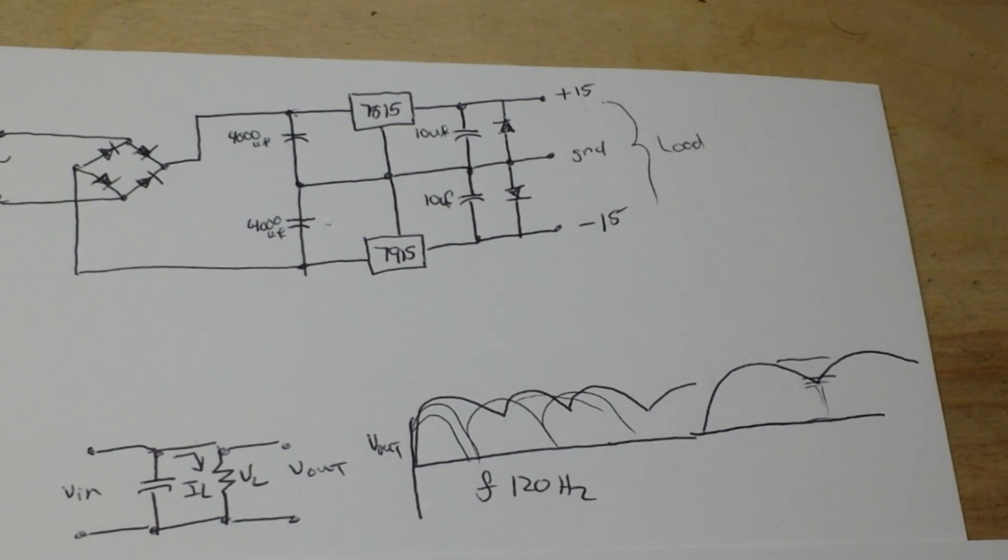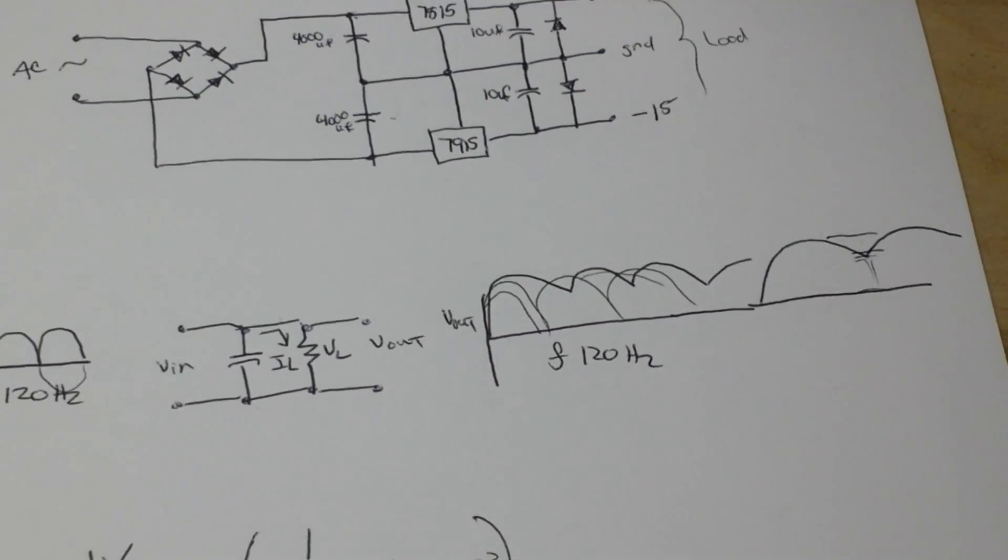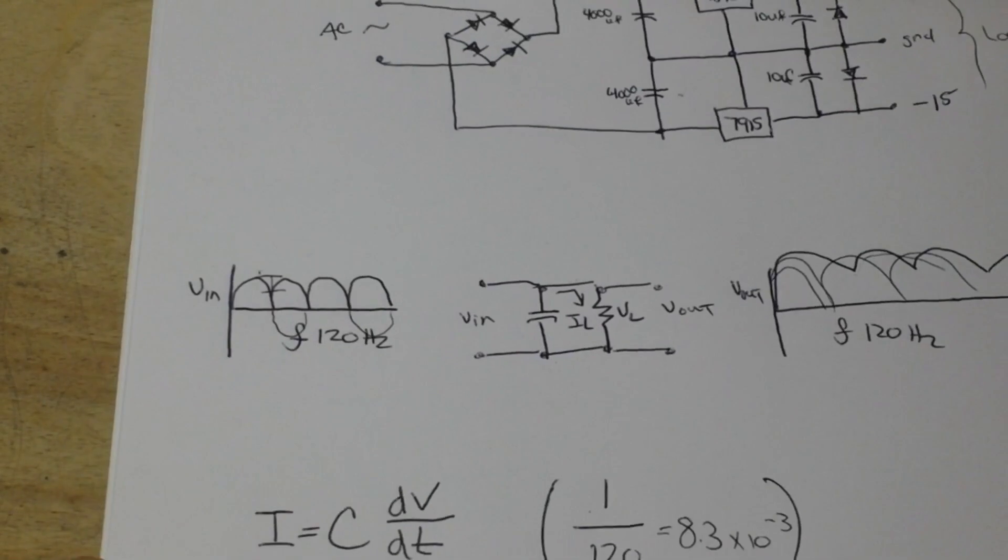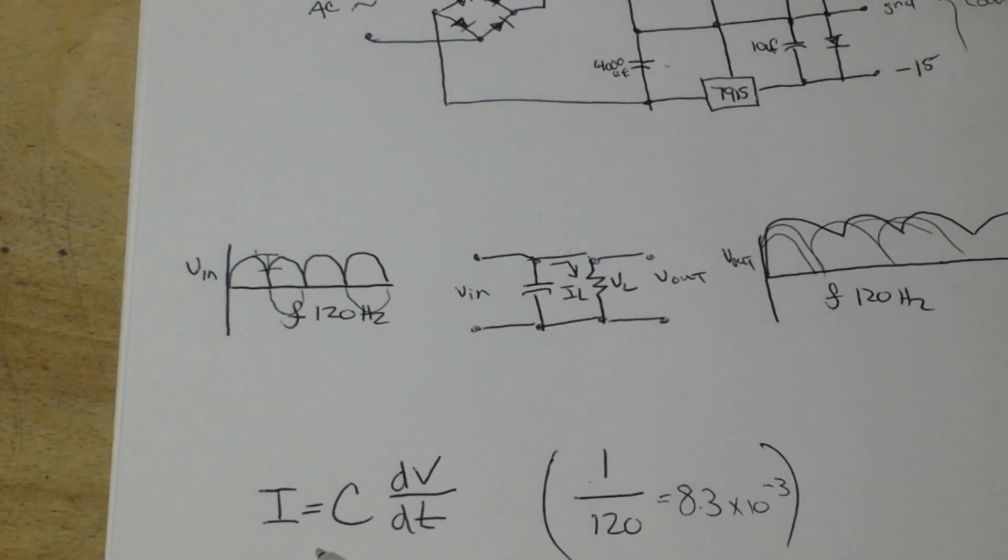We need to know how to find the ripple so that we can choose the capacitors to do the job. So how do we do that? Well, there's a formula, of course. It is: I = C × dV/dt. dV is our ripple in RMS, so basically it is the difference between the peak and the trough. dt is our time. This is kind of hard to calculate, so this is an approximation that I've used over the years: 1 over the frequency. That gives you like 8.3 × 10^-3, and that will allow us to calculate our ripple.